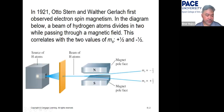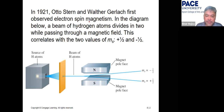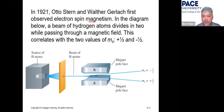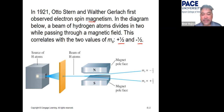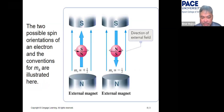In 1921, two German scientists, Otto Stern and Walter Gerlach, observed electron spin magnetism. A beam of hydrogen atoms divides in two while passing through a magnetic field, giving a positive one-half value and a negative one-half value — that's the fourth quantum number, the spin quantum number.